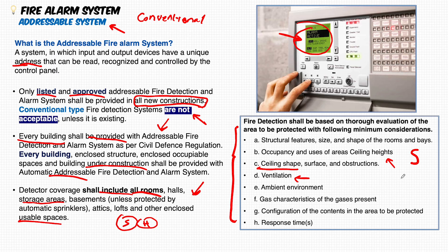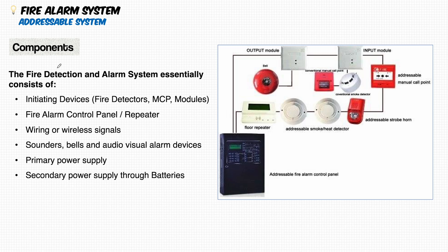Before designing the fire alarm system, study the room dimensions, ceiling criteria, ventilation, and ambient environment — for example, dust or other conditions. This leads to correct selection of detectors and proper spacing between devices, which we'll be covering in upcoming videos.